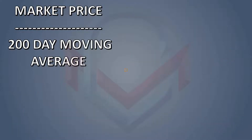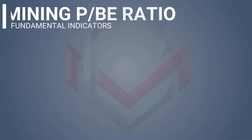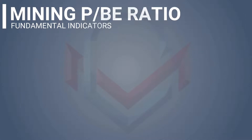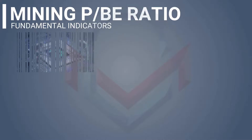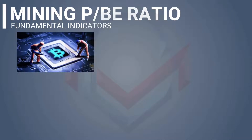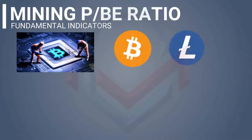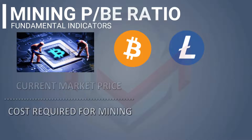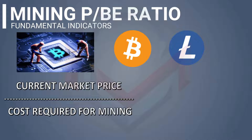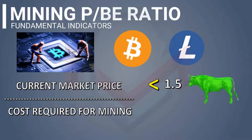The fourth indicator is the Price-to-Mining Cost Break-Even Ratio, also called the P/BE Ratio. This ratio applies to mining-related coins — for example, Bitcoin and LTC. It compares the current market price to the mining cost. A ratio of 1.5 is a bullish signal, and 3.2 is a bearish signal.